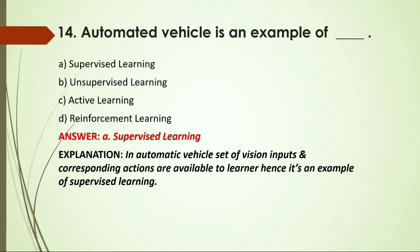MCQ: An automated vehicle is an example of — A) Supervised learning; B) Unsupervised learning; C) Active learning; D) Reinforcement learning. Answer: A, supervised learning, because in an automatic vehicle, a set of vision inputs and corresponding actions are available to learners.